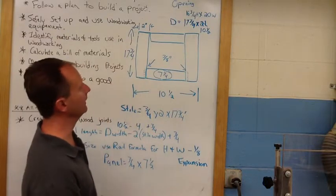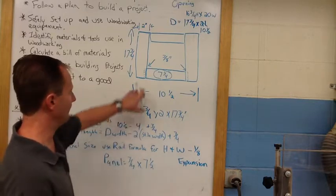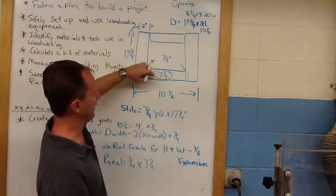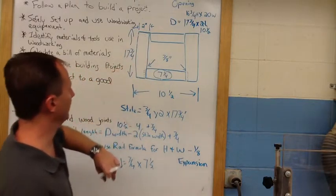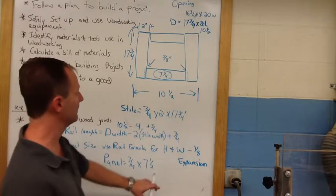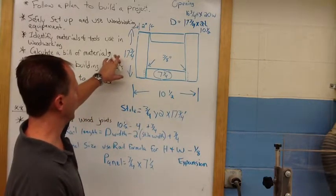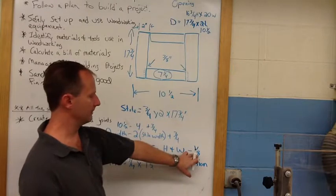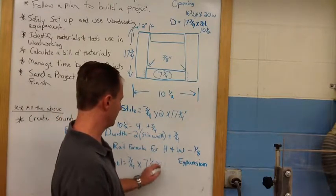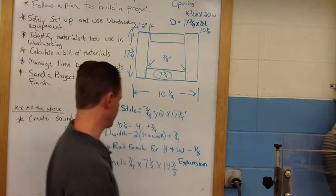Now, I have 17 and 3 quarter inch height. If I take off the rail width, that means I'm taking off 4. That brings me down to 13 and 3 quarters. I need to add back 3 quarters. So, that puts me at 14 and a half minus an eighth. That puts me at 14 and 3 eighths of an inch.